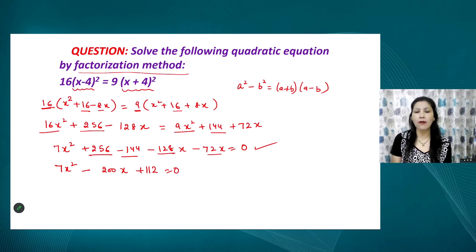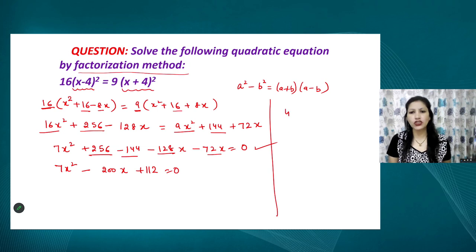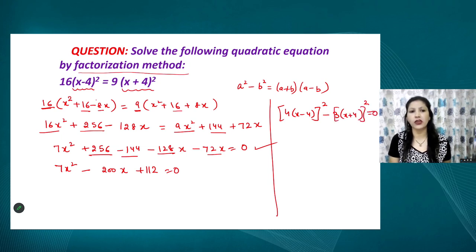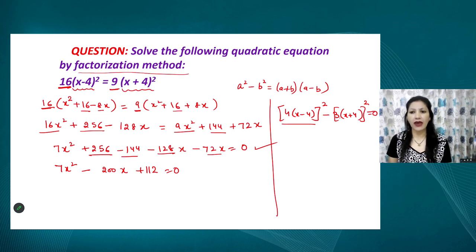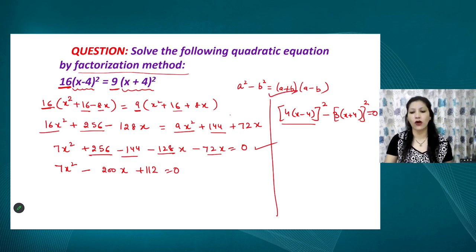The other method is more technical but more convenient — for that, please visit the Quadratic Equations Part 2 session. As a clue: since 16 = 4² and 9 = 3², the given equation can also be written as (4x − 4)² − (3(x + 4))² = 0, and then you apply the a² − b² identity to solve the equation.